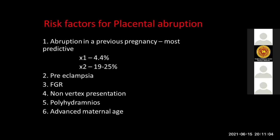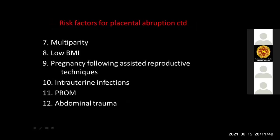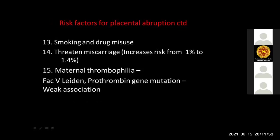Risk factors for placental abruption include a history of previous abruption — the most predictive factor, with a 4.4% recurrence risk after one previous abruption and 19–25% after two. Other risk factors include preeclampsia, fetal growth restriction, non-vertex presentation, polyhydramnios, multiparity, low BMI, smoking, drug misuse, threatened miscarriage in the first trimester, and maternal thrombophilia including factor V Leiden and prothrombin gene mutation as weak associations.